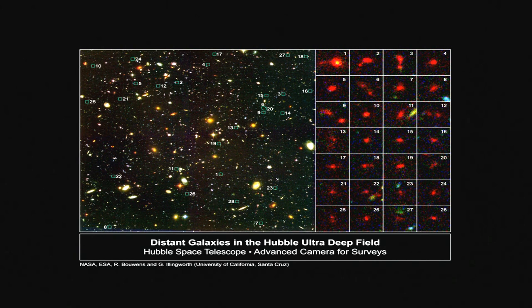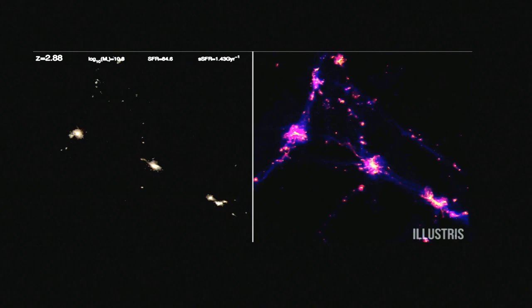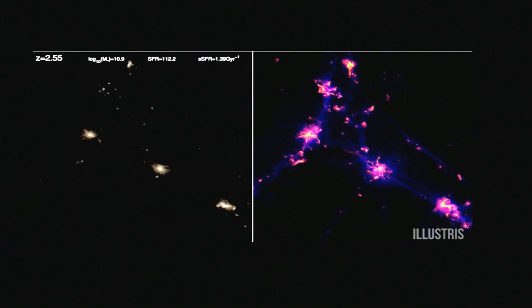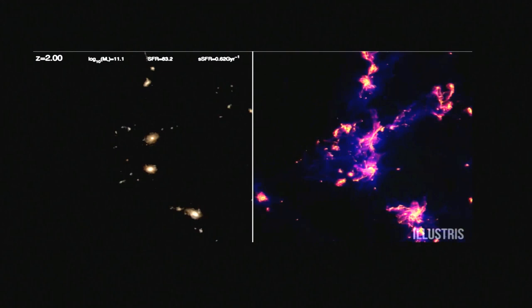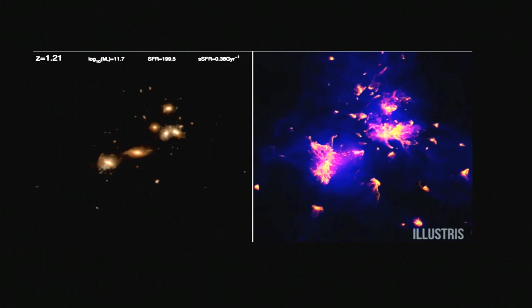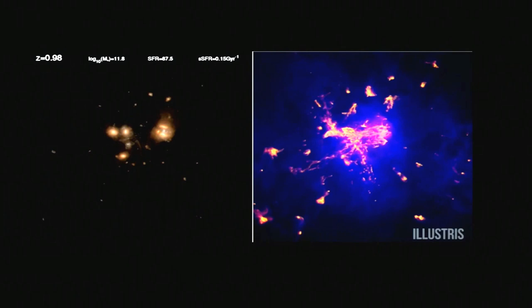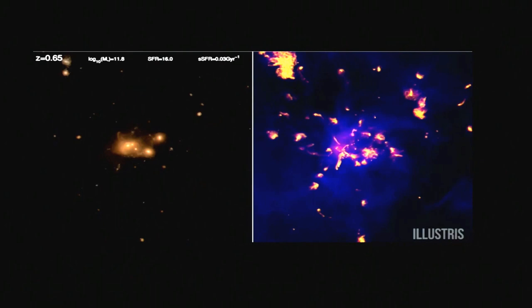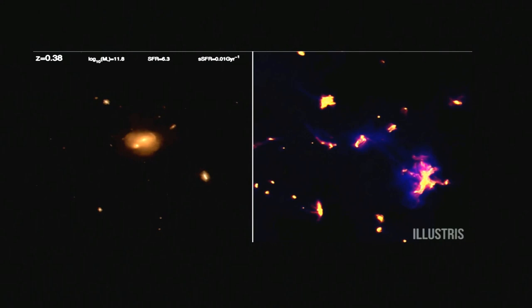This is an example of a simulation done on a massive computer. Looking at the same patch of sky — stars on the left, gas on the right — starting when the universe was a few billion years old, you can see several spiral and elliptic galaxies coming together, merging, interacting, which leads to bursts of star formation. The shapes evolve, and this will turn into what, in the present-day universe, would be a massive elliptical galaxy of the type we saw in images earlier.